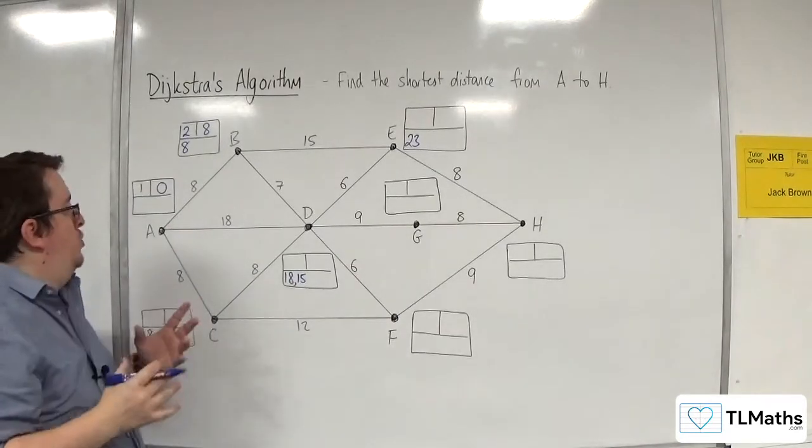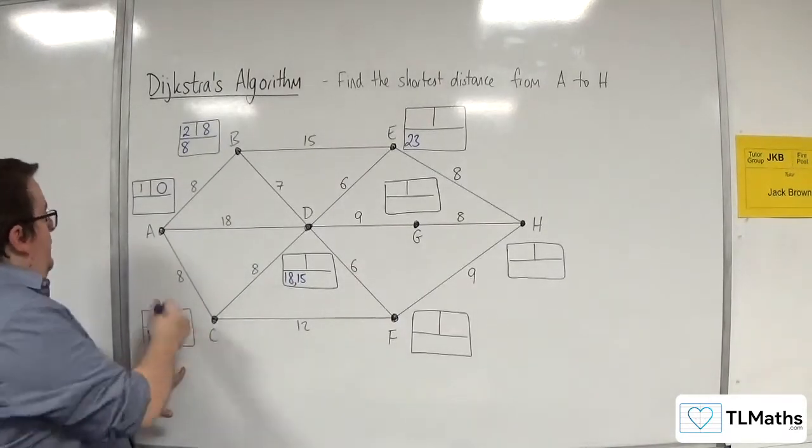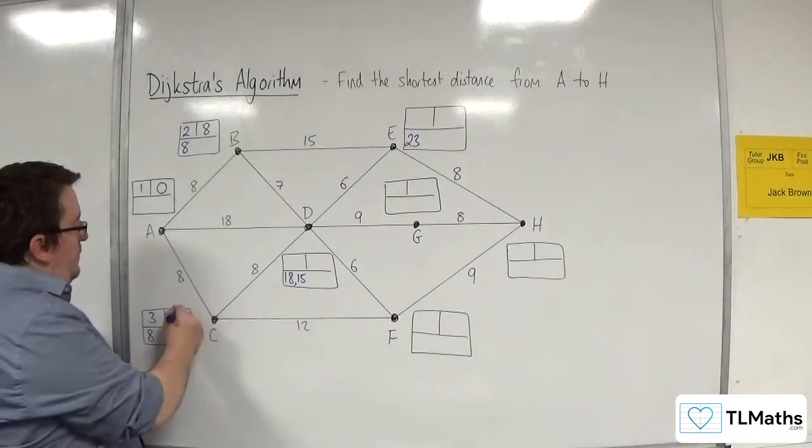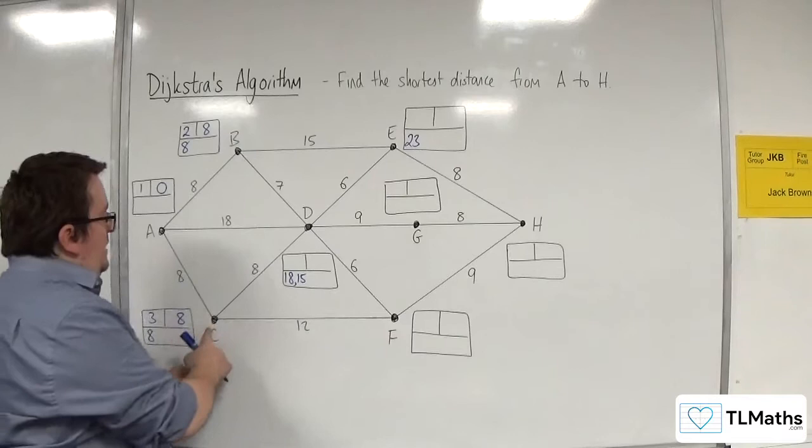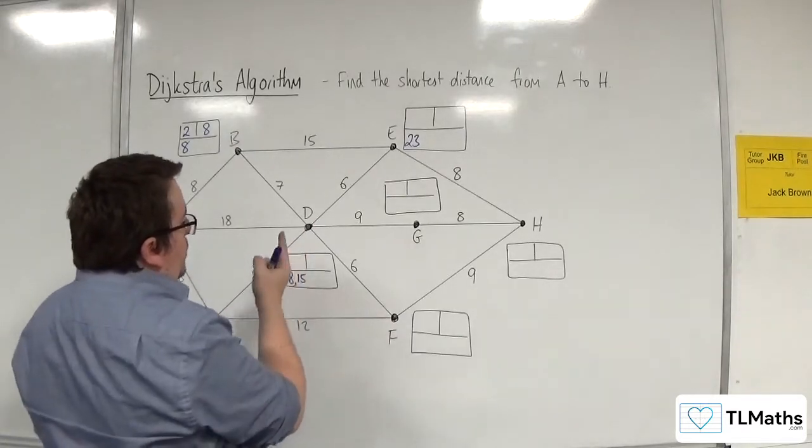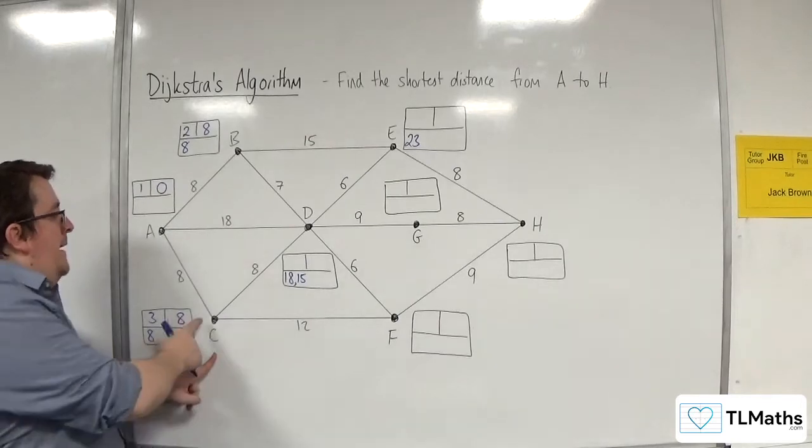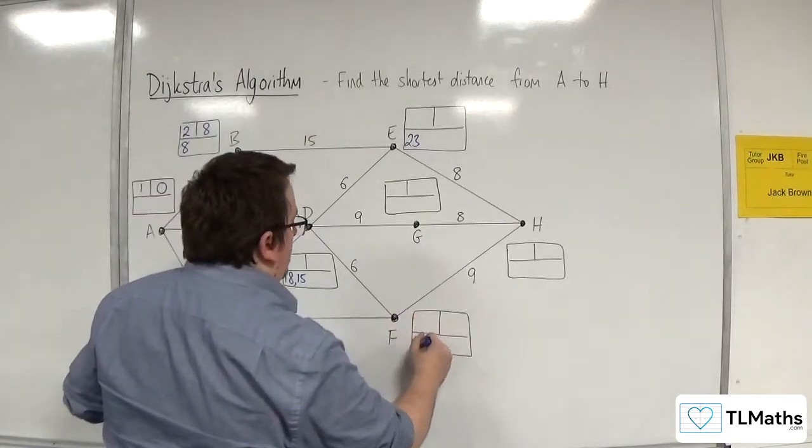Okay, so the next shortest is C, so that gets put in as the third one to be considered, and the final value is 8. 8 plus 8 is 16, which is not better than 15, so I don't write anything down. 8 plus 12 is 20, and that goes in there.